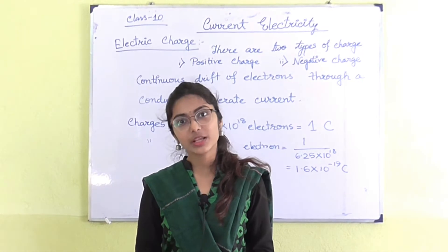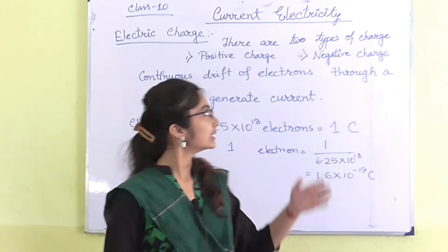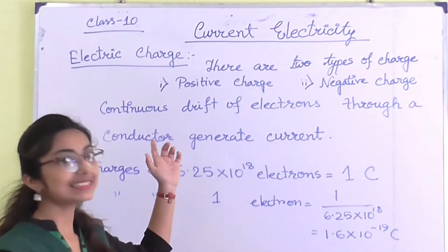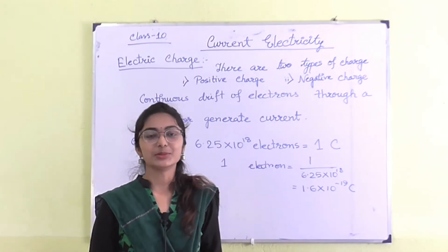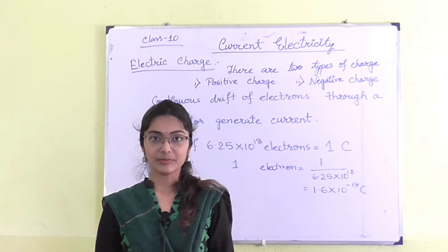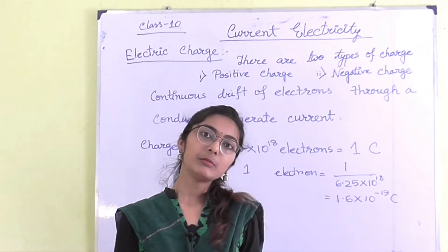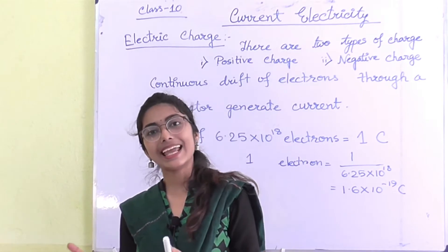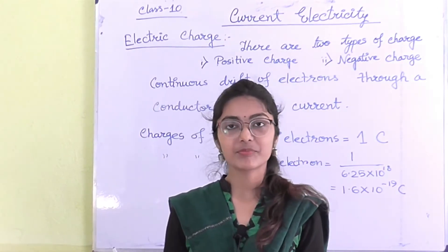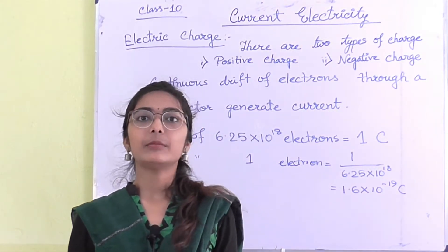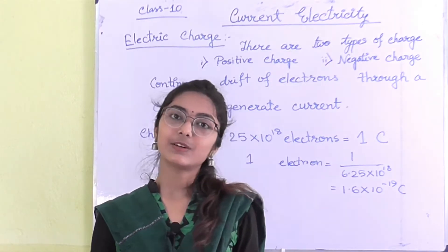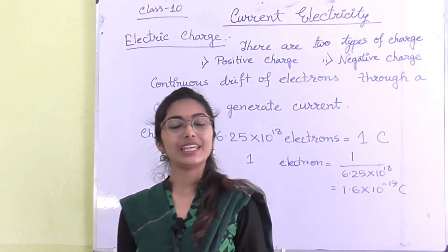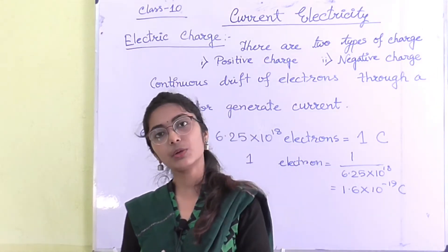Hello everyone. Today I am going to discuss the chapter Current Electricity of Class 10. What is electricity? Electricity by practical means is an amount of energy that can be converted into any type of desired energy. Suppose you are using calling bells, so electric energy is transferred into sound energy. You are using an electric cooker, so electric energy is transferred into heat energy.